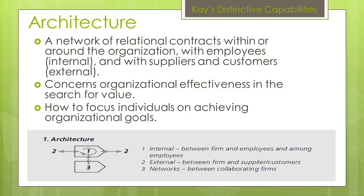Architecture is the first distinctive capability we will talk about today. Defined, architecture is a network of relational contracts within or around the organization — with employees, which are the internal, and with suppliers and customers, which are the external. The picture below displays a company's relationships. In more layman terms, it is management of relationships throughout a company. By managing or keeping relationships organized, be it with your employees, clients, or other companies, more value is added to the organization. Architecture concerns organizational effectiveness in the search for the value that defines the company. Architecture also allows for individuals to focus on achieving organizational goals, which in the end bring more value to a company.